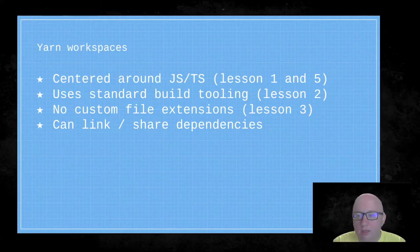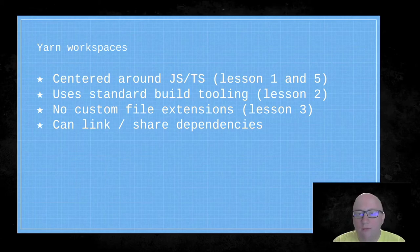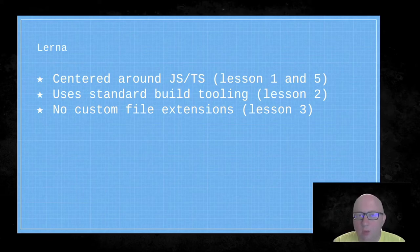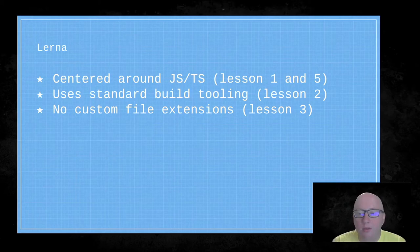Another option is Yarn Workspaces. It's centered around JavaScript and TypeScript, uses standard build tooling, and has no custom file extensions. Unfortunately it doesn't meet lesson four — you can share and link dependencies but you're on your own for organizational structure with no out-of-the-box deployment and distribution for app targets versus shared code. Similarly, Lerna is a tool for managing JavaScript projects with multiple packages that meets lessons one through three but also misses lesson four. It's more geared toward open source library management. Both are good options if you're already using them.